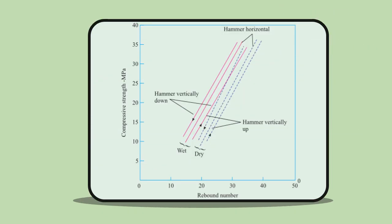The typical relationship between compressive strength and rebound number with hammer horizontal and vertical on a dry or wet surface of the concrete is shown on the screen.